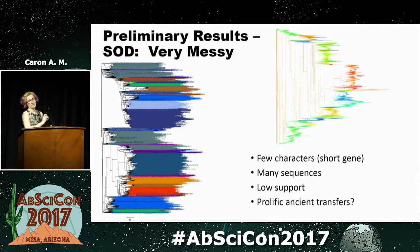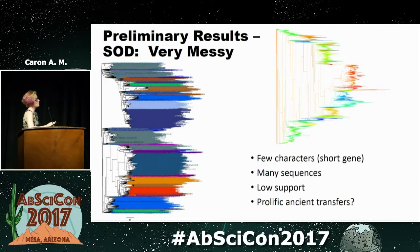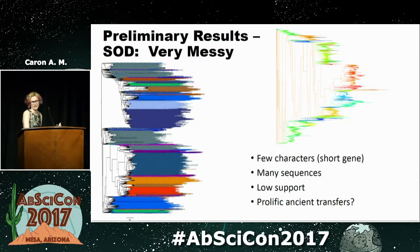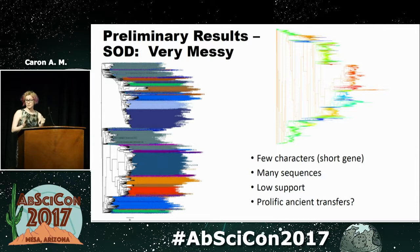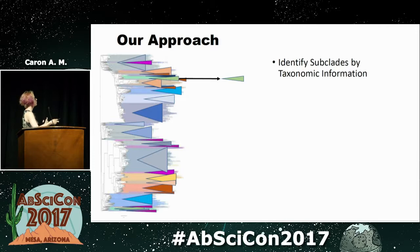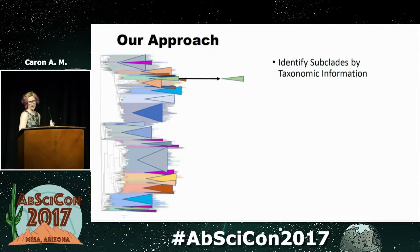Turns out that this is really, really messy. My previous work was all on eukaryotes that have just a few transfers — okay, we can just count them, this will be a breeze. It's not. Bacteria are sharing their genes all over the place, and we end up with a really complicated tree that infers thousands of transfer events at really low support. So we needed some way to deal with this — the main problem is that we just have a short gene, only a few hundred characters, and we have so many sequences. So we came up with this approach in which we identify subclades by taxonomic information — all of this is automated, so once I do it once I should be able to do it a bunch of times.